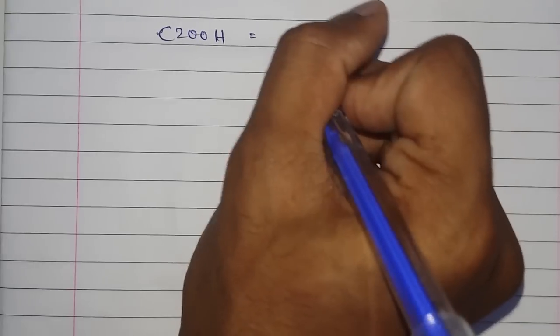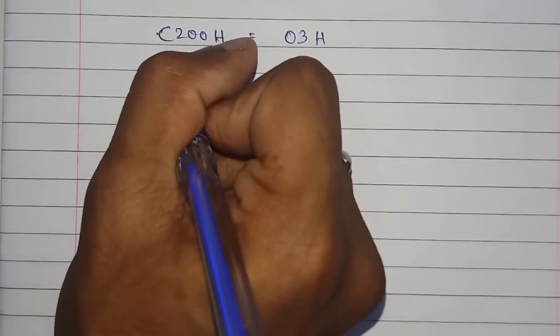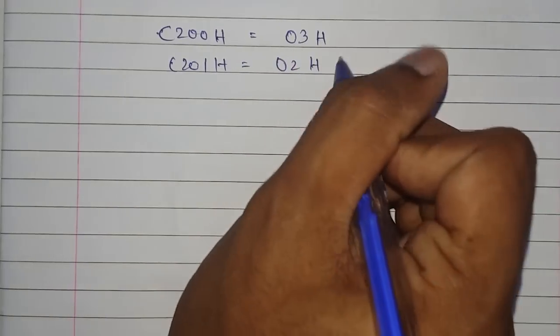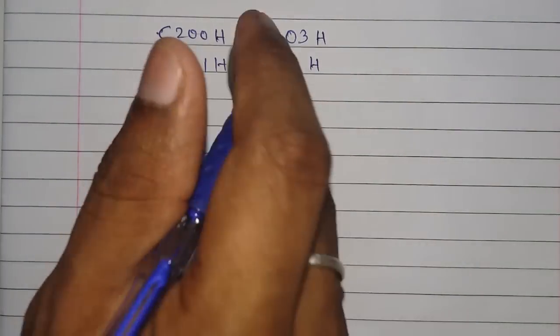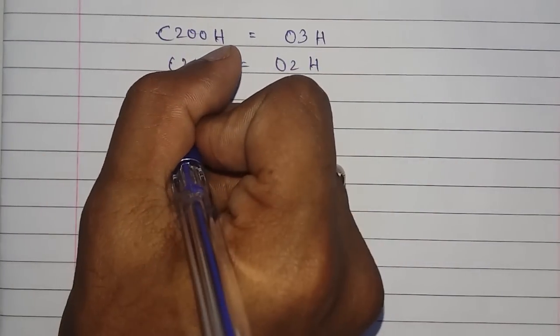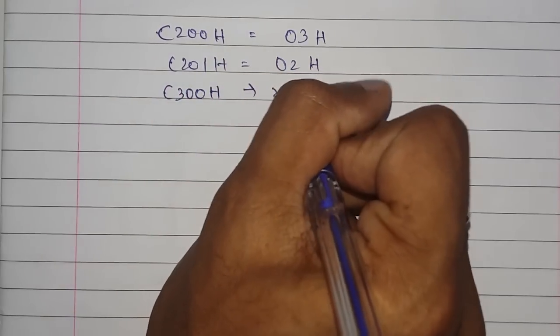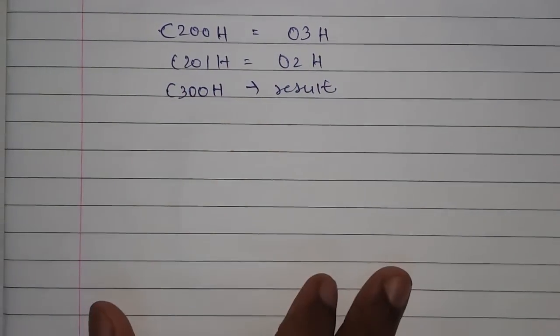We will take this as the first memory location and this as the second one. I'm taking a simple example so that you guys can understand. We have to store the result here.